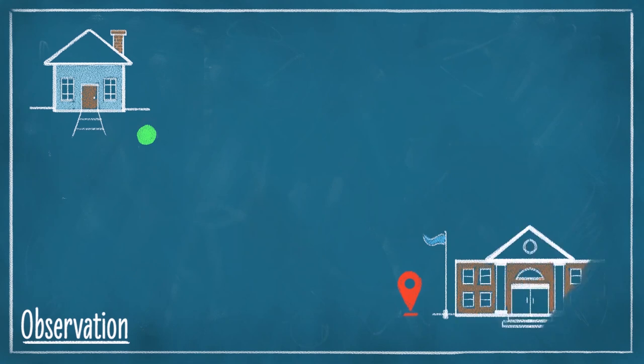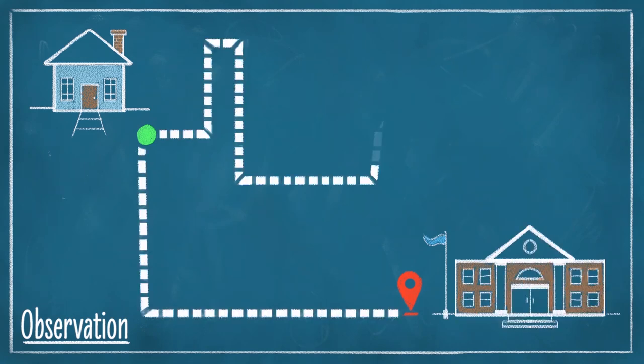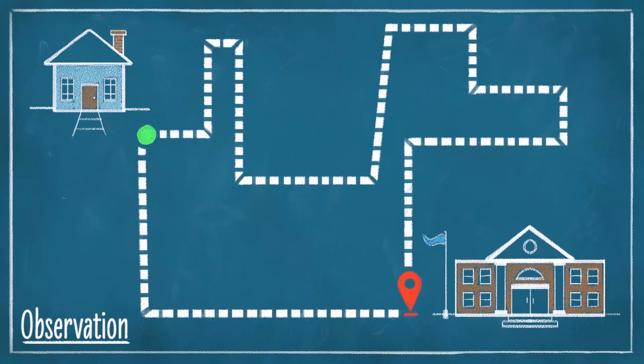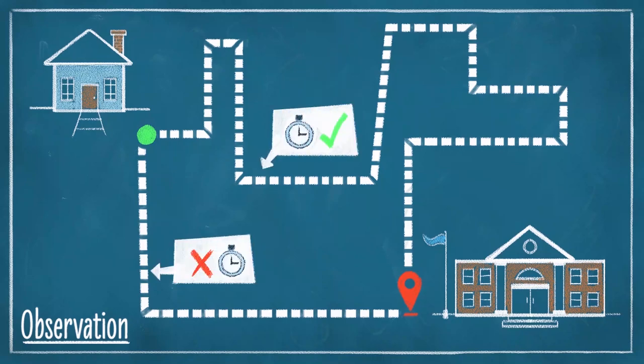For example, I might notice that there are two ways that I can drive to school each day. One path is longer than the other, but I seem to get to school faster when I take the longer path. Why would this be?